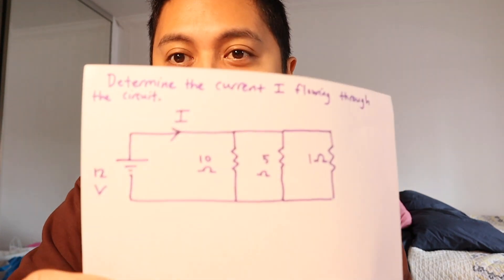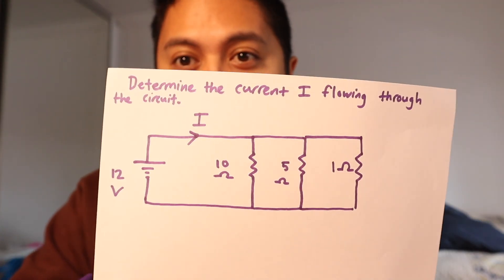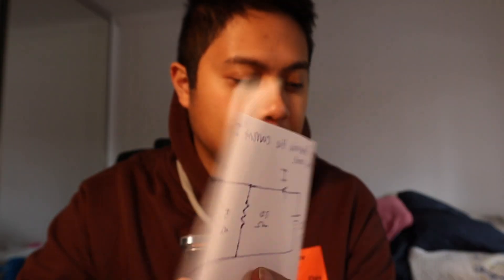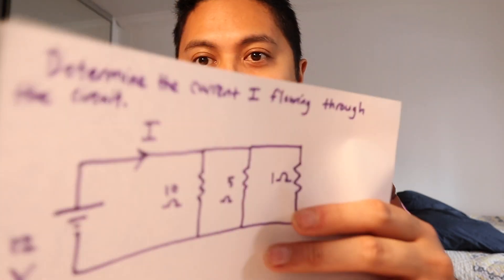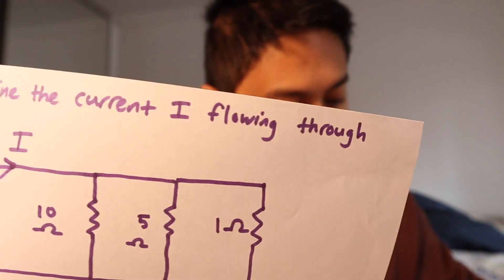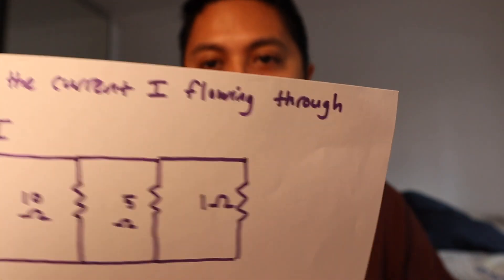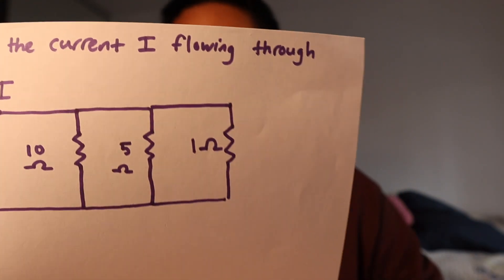Moving on, I want to try a kind of problem that people have been asking for quite a bit — a good old circuit problem. People really wanted me to do circuit problems. So, this is a very basic one. We have three resistors in parallel, and the problem is to find the current that goes through this circuit. I did actually do this problem beforehand — it's 15.6 amps is about the current. So let's go ahead and see if ChatGPT can help me out here.